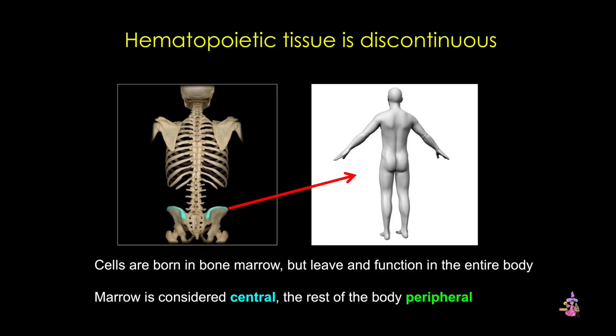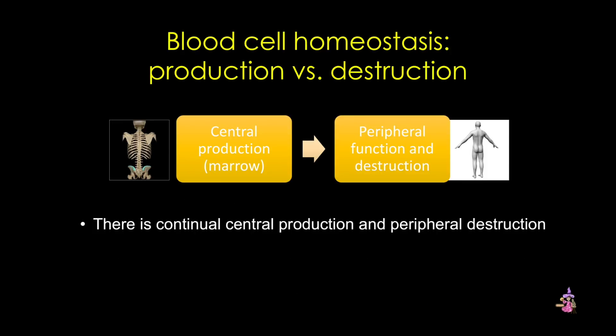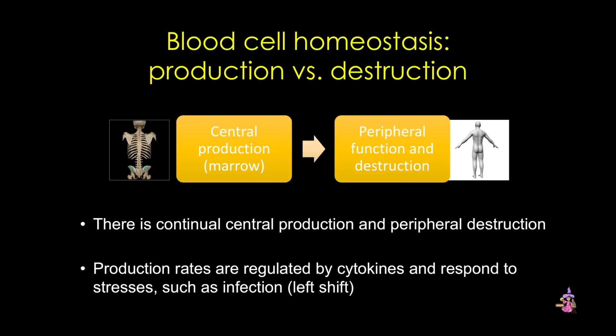For example, a problem that affects blood cell production is considered a central problem, while anything that affects blood cells in other locations of the body, such as destruction of red blood cells in the spleen, is considered a peripheral problem. Production of blood cells can be increased or decreased according to the body's needs, and this is controlled by a large signaling network of cytokines. Now, before we talk about how blood cells are generated, let's take a short foray into embryology.